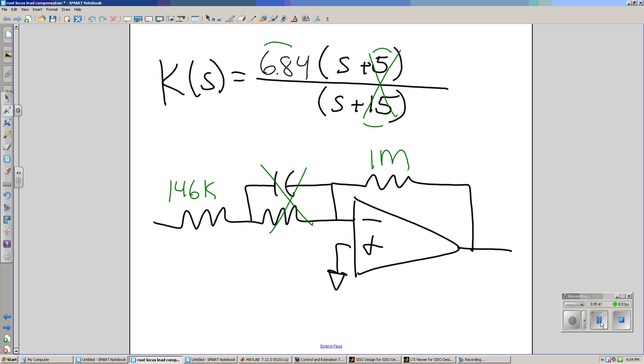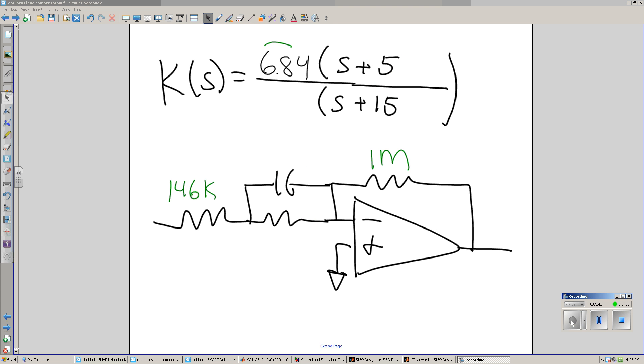Next, let S go to zero. At S equals zero, these terms go away. I'm left with a gain up top of 2.28. As S goes to zero, the capacitor becomes an open circuit. It doesn't matter.